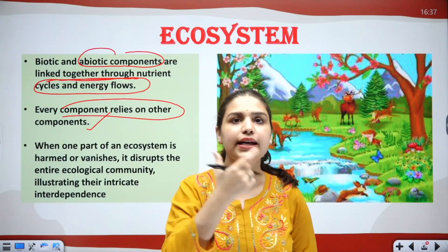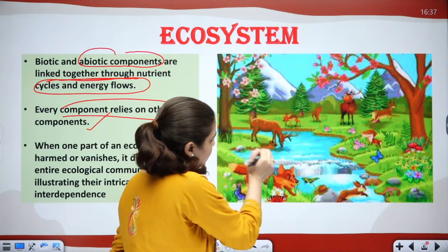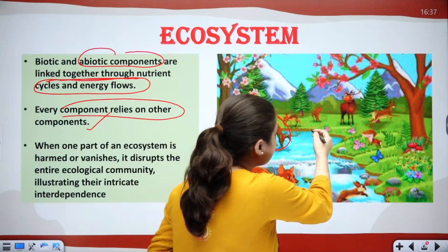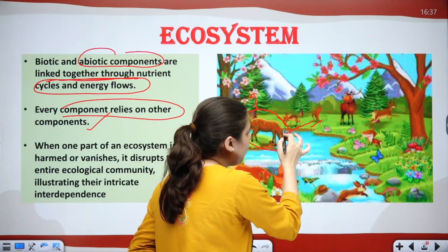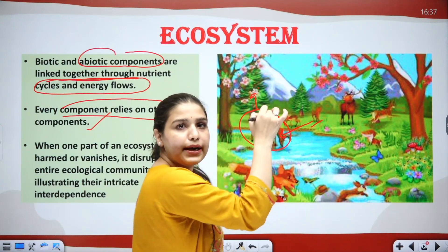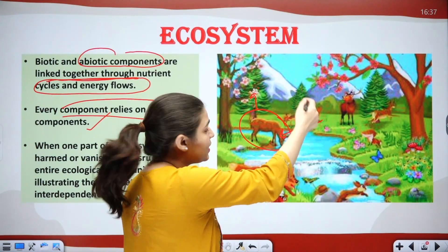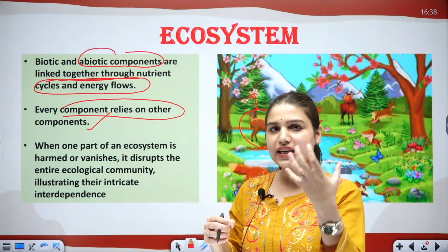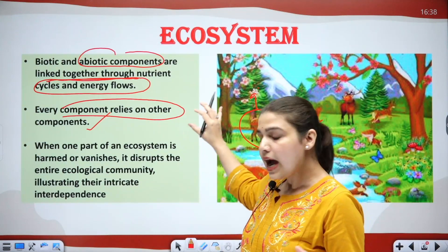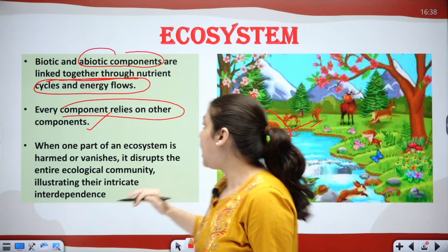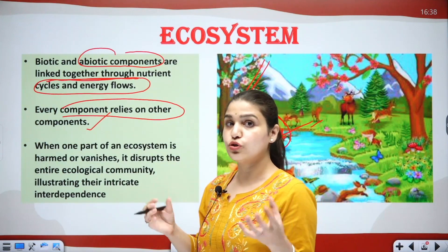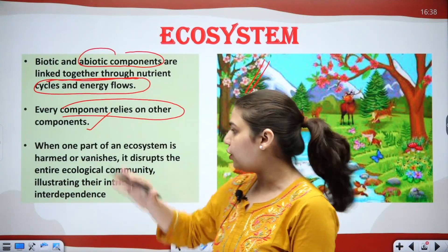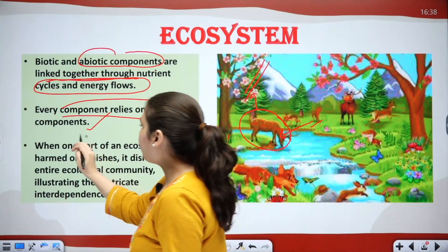Every component relies on the others — all components are interdependent. For example, in this picture you can see a deer. The deer is herbivorous and will eat plants. We also have tigers; the tiger can feed on the deer. So the deer is dependent on plants, and the carnivore tiger is dependent on the deer. Similarly, plants consume nutrients from soil and rain helps in plant growth — biotic and abiotic factors are interdependent.